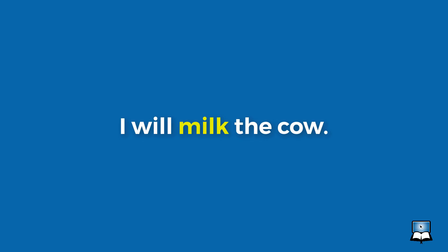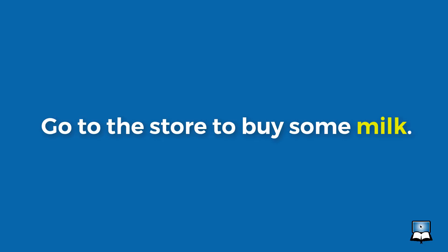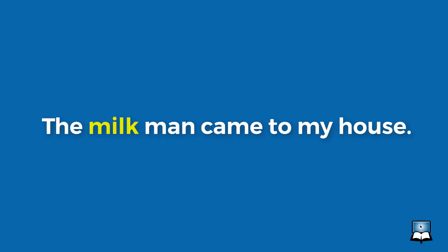For example, "I will milk the cow" — here it's used as a verb in the future tense. Or "go to the store to buy some milk," in which it's used as a noun and it's a direct object. Or "the milkman came to my house."